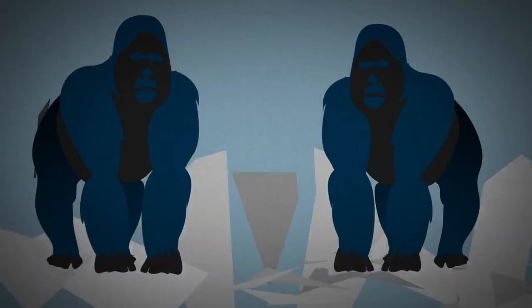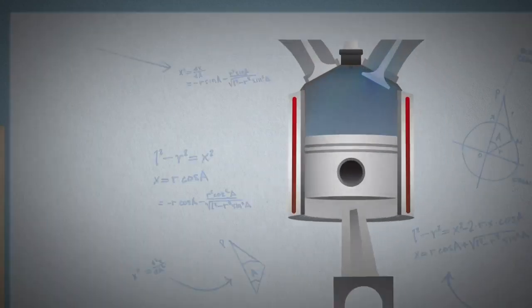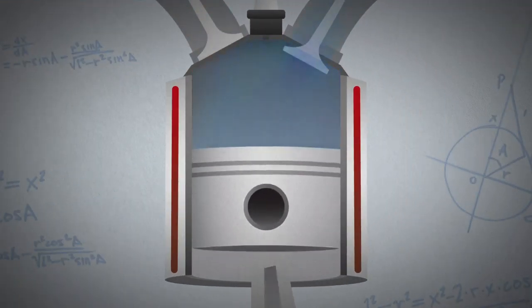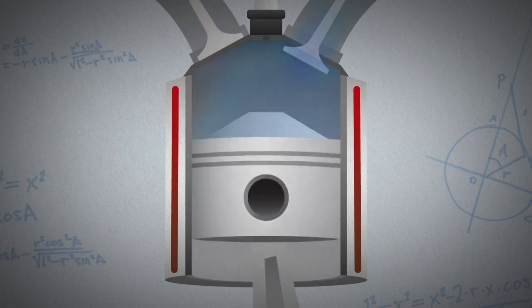Two 800-pound gorillas stood in our way. The first was figuring out how to capture more energy from the fuel. To do that, we needed to raise the compression ratio by placing a dome on each piston. Because the more you squeeze the air-fuel mixture, the more energy you get from the combustion.